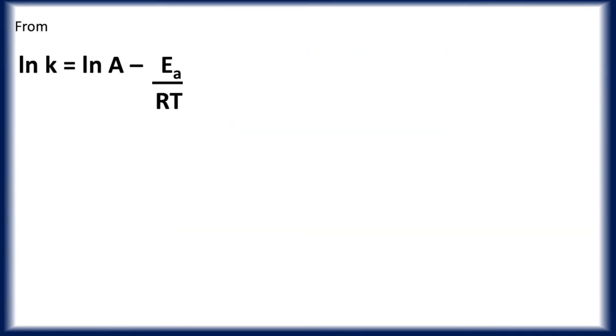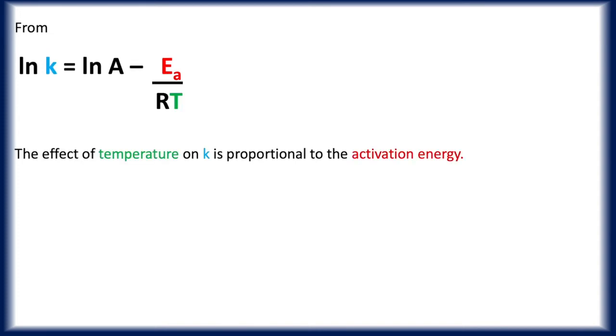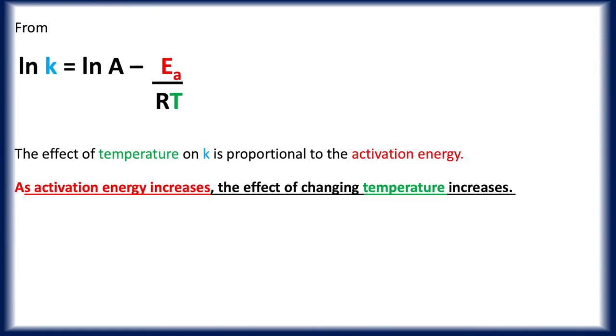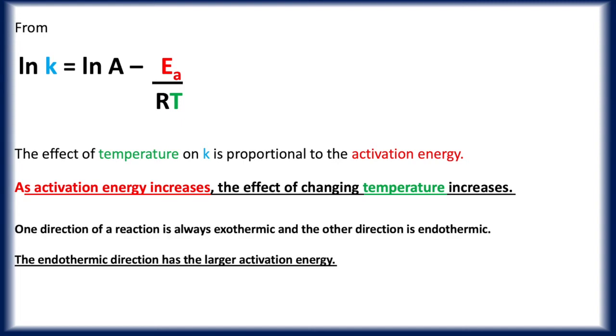So when we go back to the Arrhenius equation, we can see that the effect of temperature on K is proportional to the activation energy. So as our activation energy increases, the effect of changing temperature will increase. And we know that in an equilibrium, one direction of the reaction is always exothermic and the other one is endothermic, and the endothermic direction will have the larger activation energy.